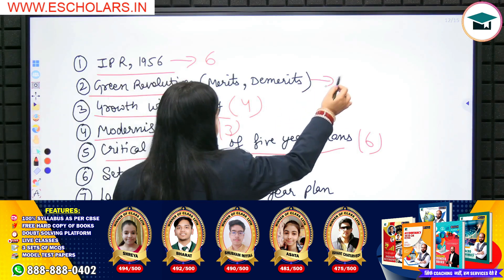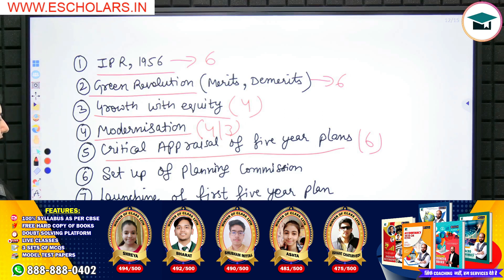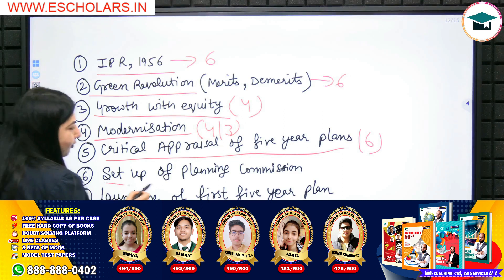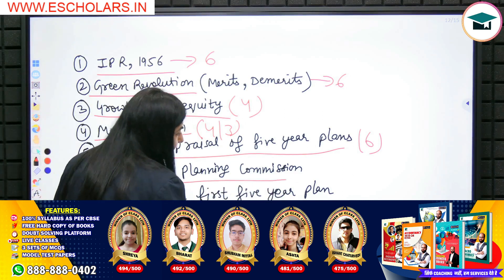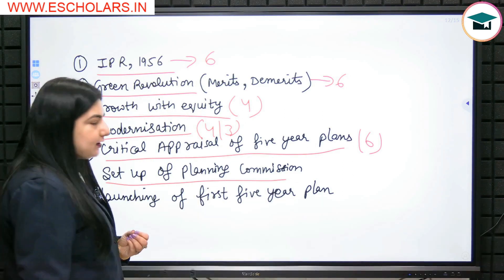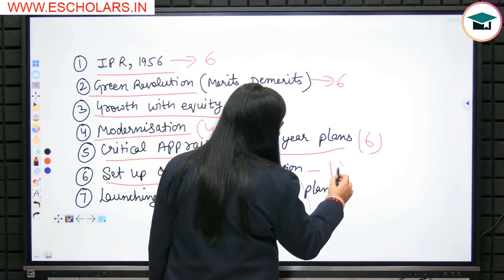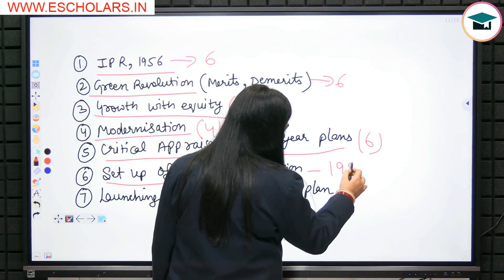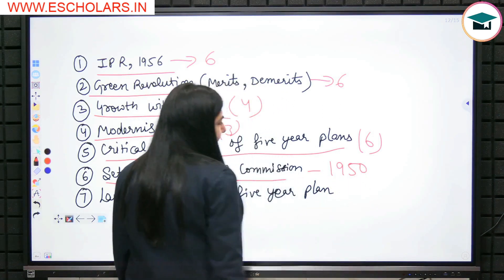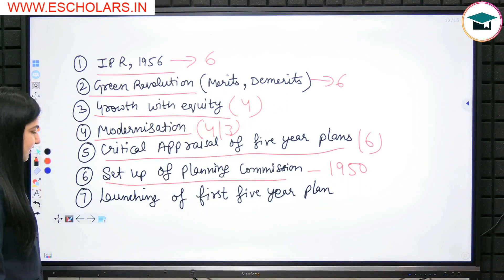Green Revolution भी 6 marks के लिए prepare करना है। Next, Setup of Planning Commission — Planning Commission किस year में set up हुई थी? 1950 में। यह बहुत important question है जो MCQ के form में 1 mark में पूछा जा सकता है।